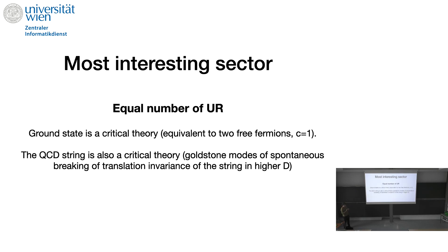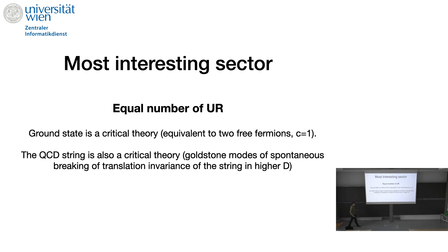The QCD string is also a theory of critical fluctuations because of Goldstone bosons of spontaneous symmetry breaking, and you're already getting the correct c=1 result. The XX spin chain is in 2+1 dimensions because this is Hamiltonian physics, so there's an extra time dimension.